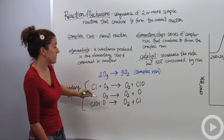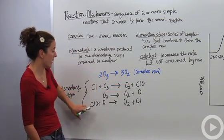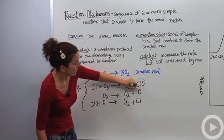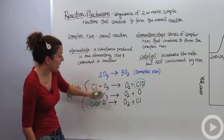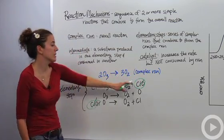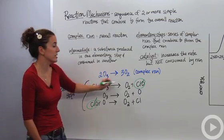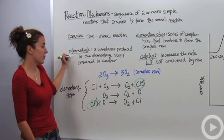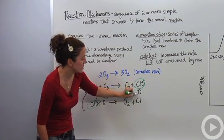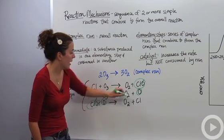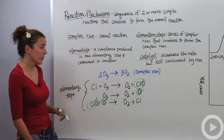So this guy, since this is being produced and then consumed again, here, then here, this is our intermediate. We can cross those out. Those are not part of our overall reaction, it's produced and then consumed. That's our intermediate. We also have an intermediate with oxygen, produced and consumed.